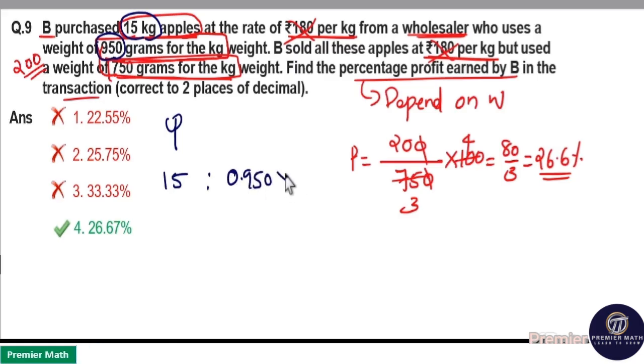So this is for 1 kilogram. Now he bought total 15 kilograms. So total weight he got is 15 into 0.95. Now when customer asking for 1 kilogram he is only giving 750 grams. 750 grams means 0.75 kilograms. So this is what he sells.